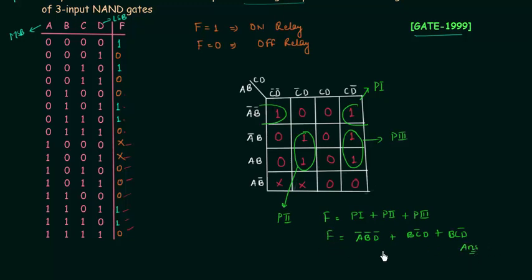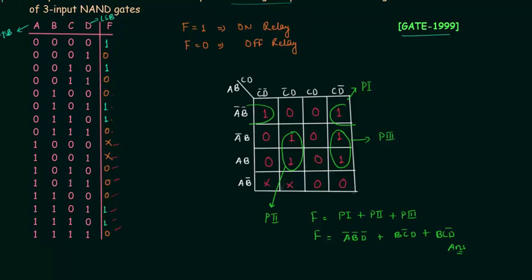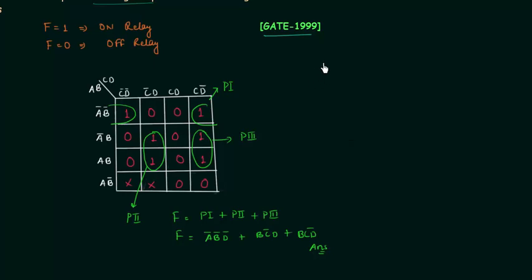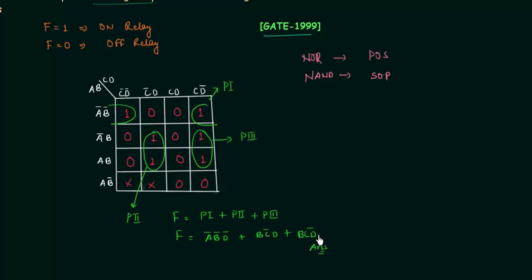Now we have to implement this function using a minimum number of 3-input NAND gates. As I have already explained in one of the lectures, whenever you have to implement a logic function using NOR gates, try to obtain POS form. And whenever you have to implement any logic function using NAND gates, try to obtain SOP form. We have SOP form and we have to implement it using NAND gates, so everything is fine.